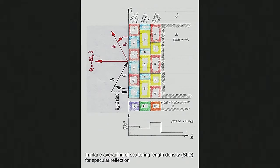If you think of this as slices of bread, you get the average scattering density for some slice of thickness ΔZ and average it — red and blue make purple, yellow and blue make green, red and yellow make orange. You get the average scattering density plotted as a function of depth at different positions Z.